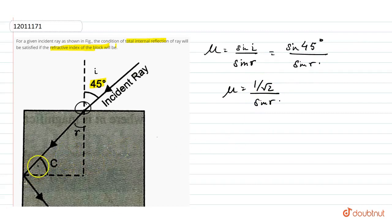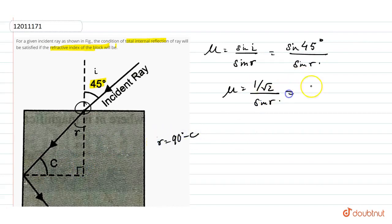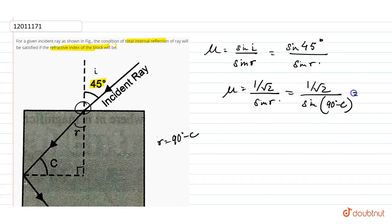Now, you can see this angle is 90 degrees. That means r is equal to 90 minus C. So we can write mu as 1 upon root 2 divided by sine of (90 degrees minus C).